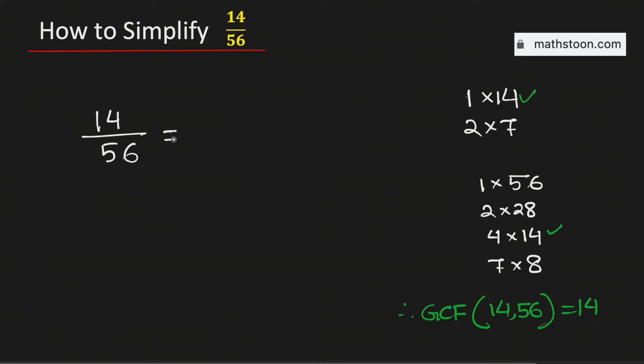Now to simplify this fraction, we will divide both the numbers 14 and 56 by their greatest common divisor which is 14. And if we do it, we will get 1 over 4.